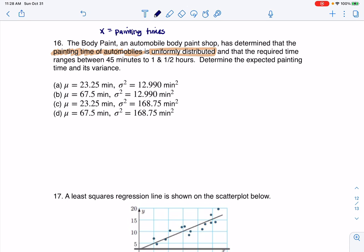Now, I was actually given two units. I see minutes here and hours. But if I look at all of the answers, they're all in minutes. So I'm going to convert everything to minutes. And we were told it was uniformly distributed from 45 minutes to one and a half hours, which is really just 90 minutes. So I have a uniform distribution here.